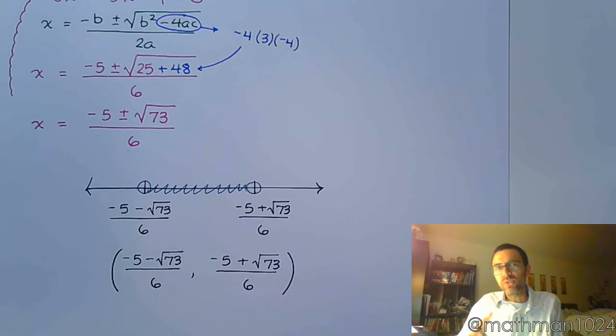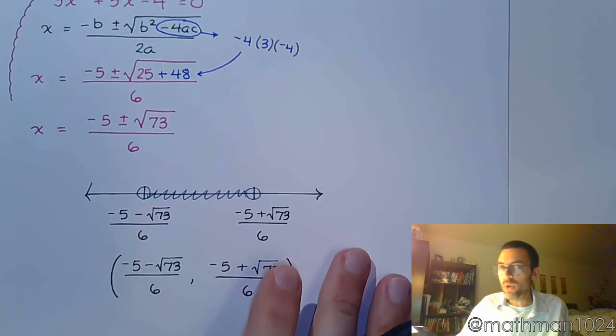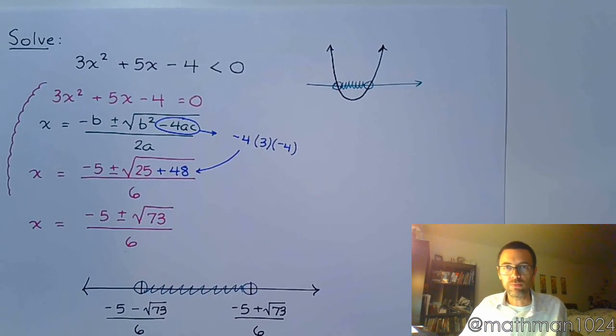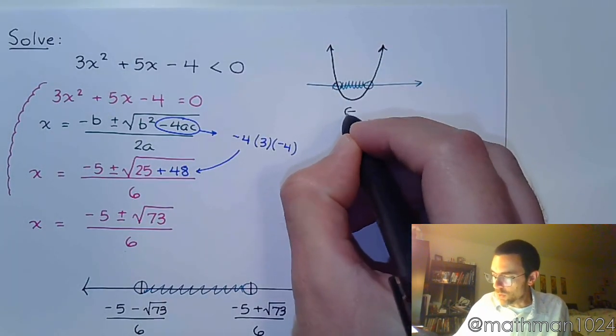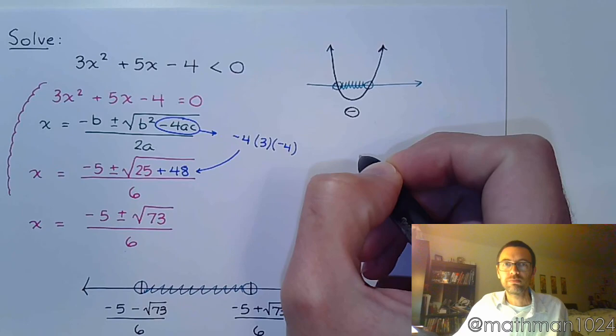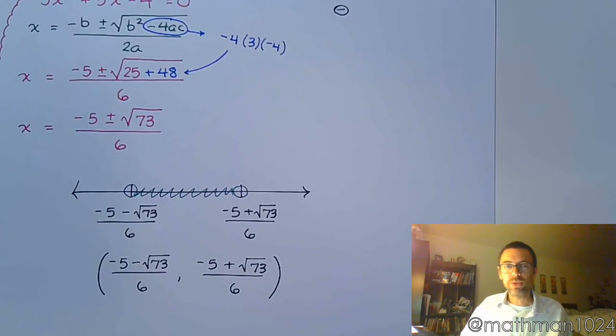And so this is a case where using a sign chart isn't all that helpful, because it doesn't factor. But by knowing the shape and knowing the picture, we knew that we were looking for this region right here, because this is where we end up with negative values. So there we go.